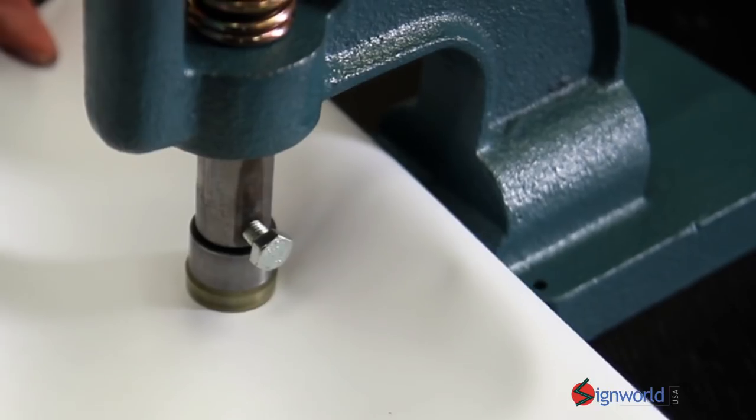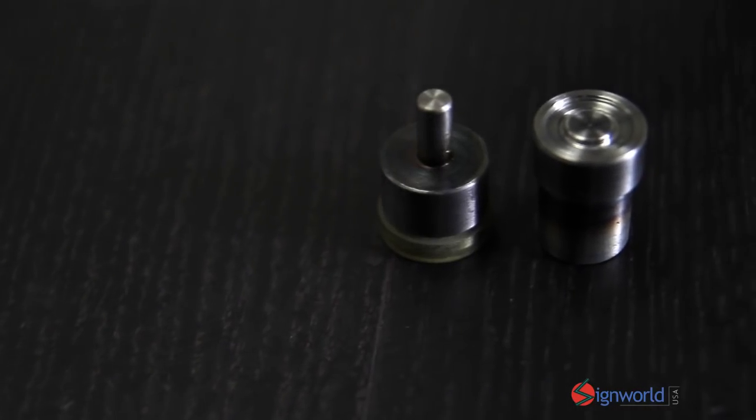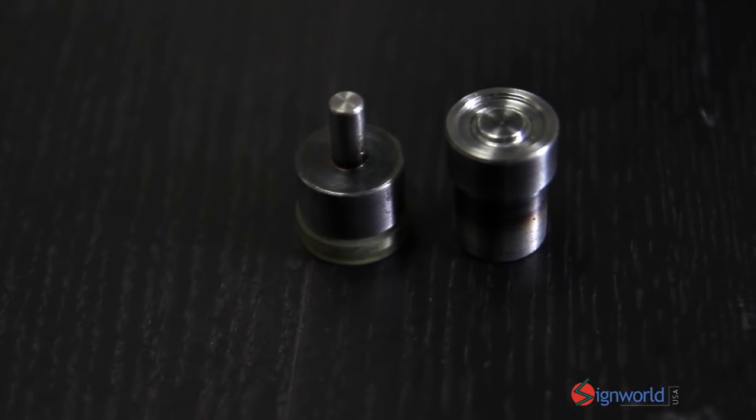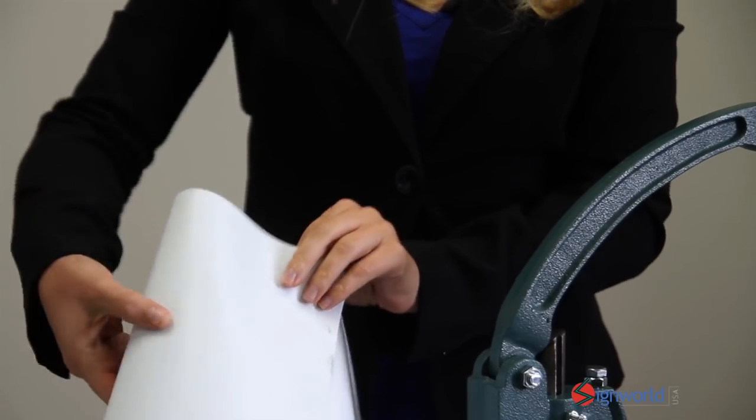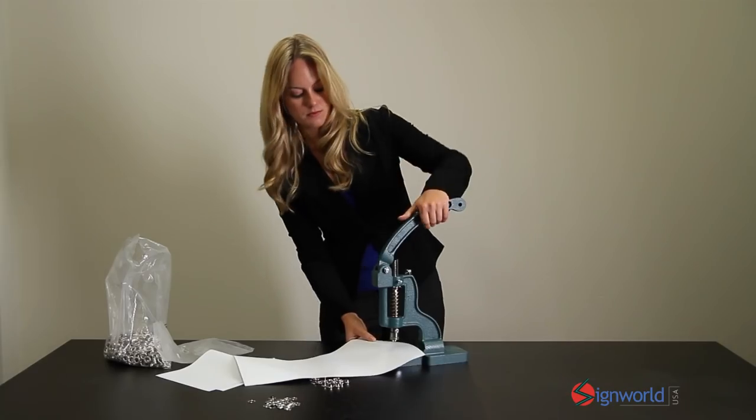A thousand grommets and a die set are included with your purchase of our grommet machine. The grommet machine punches through a multitude of materials such as paper, vinyl, fabric, and more.